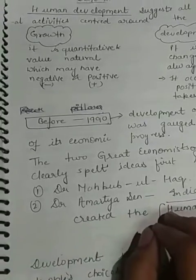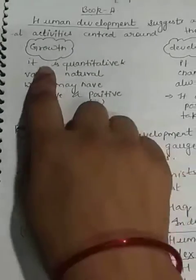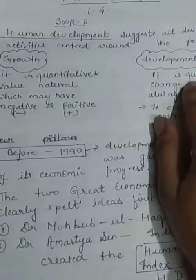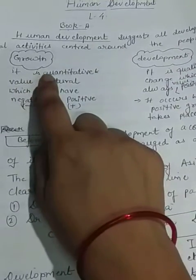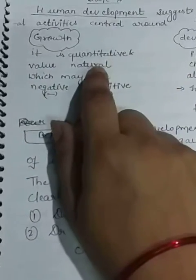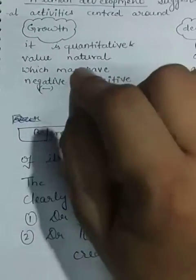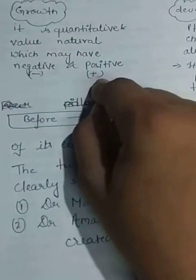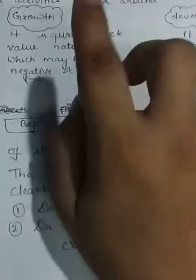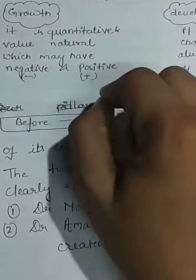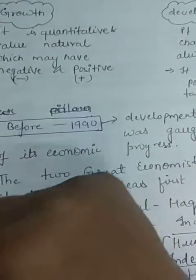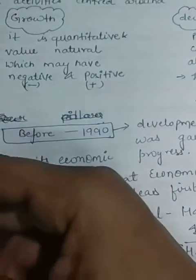This development depends on two important terms: growth and development. Growth is a quantitative term and value-neutral, which may be positive or negative. This means the change may be either positive — an increase — or negative — a decrease.